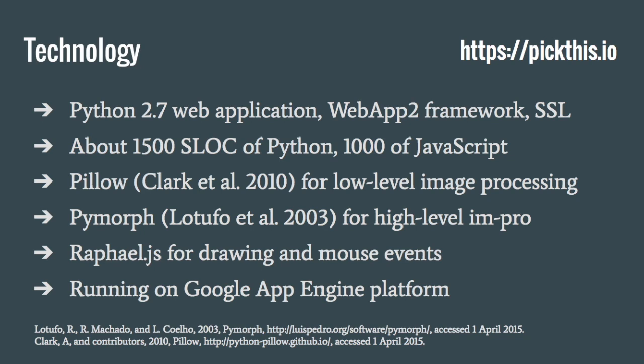Since this is a technical talk, let me give you a little background on the app itself. It's written in Python and JavaScript, running on Google's App Engine platform right now, though we have plans to move it to Amazon's AWS platform. It uses Pillow and PyMorph on the Python server side for image processing, and Rafael.js for drawing and mouse events on the front end. You can go play with it right now on pickthis.io.